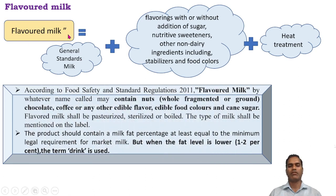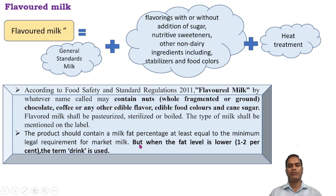As per the regulations, flavored milk is defined as a product that may contain nuts, chocolates, coffee, or any other edible — whether artificial or natural — flavors, edible food colors, and cane sugar. These are the main ingredients added in the flavored milk. Flavored milk must be properly pasteurized, sterilized, or boiled.